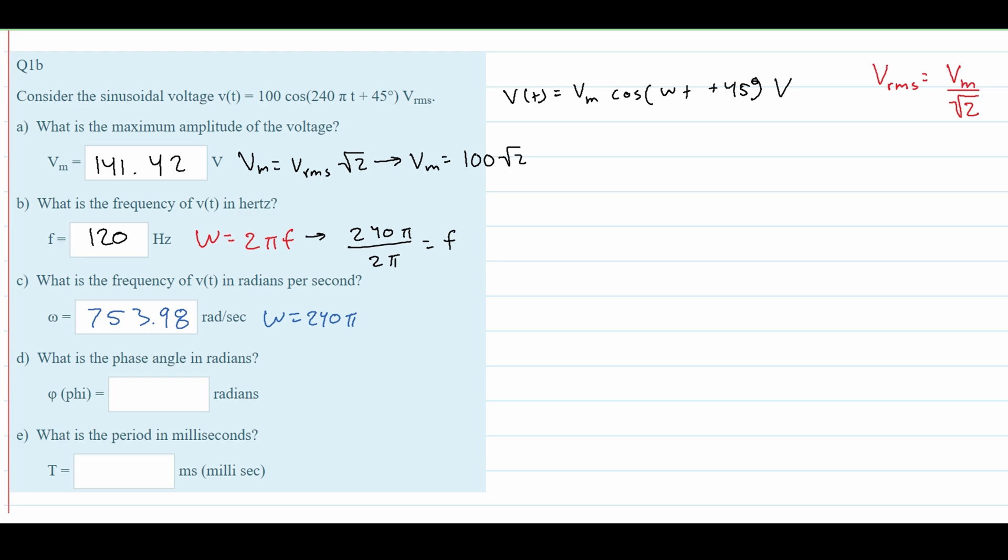Next, what is the phase angle in radians? The phase angle is this part - 45 degrees. However, that's not the final answer. This is just the general form showing where the phase angle appears in degrees.